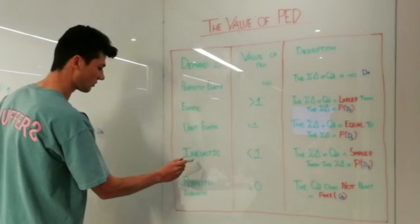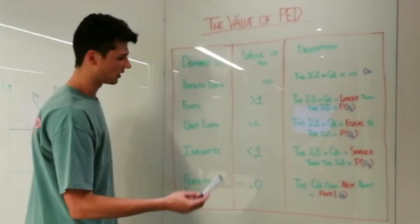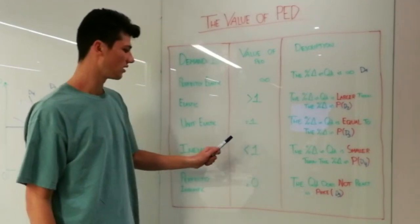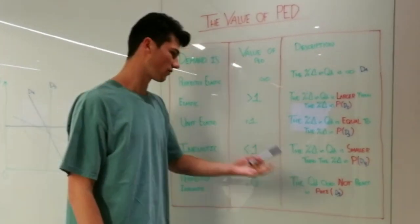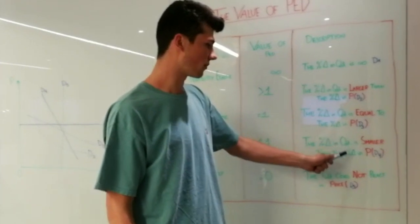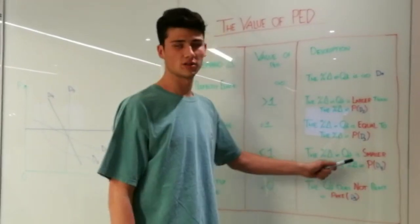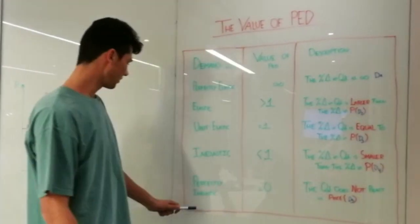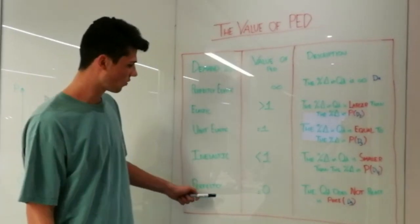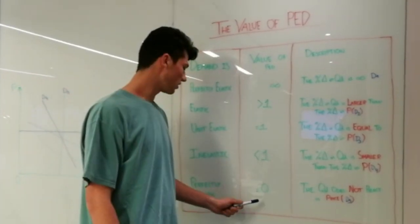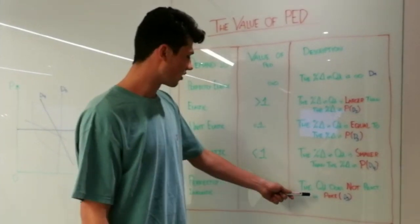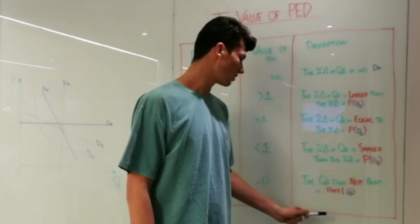Last but not least, I'm going to explain the inelastic demand. In the inelastic demand, the value of the PED has to be inferior to one, meaning the percentage change in quantity demanded has to be smaller than the percentage change in price. Finally, in the perfectly inelastic case, the value of the PED has to be equal to zero, so the quantity demanded does not react to price at all.